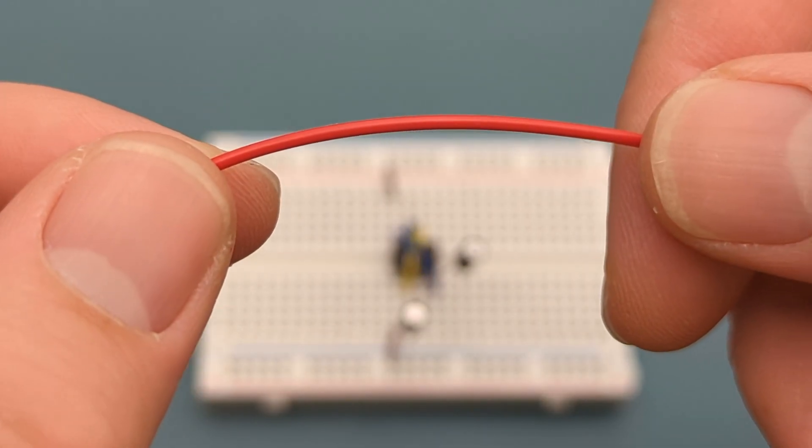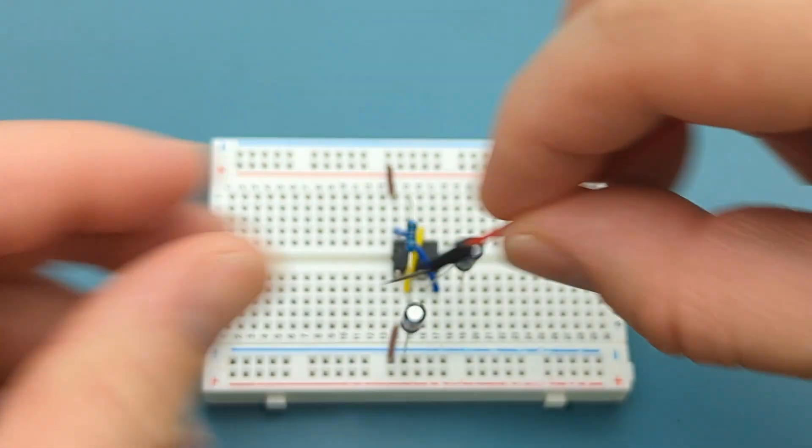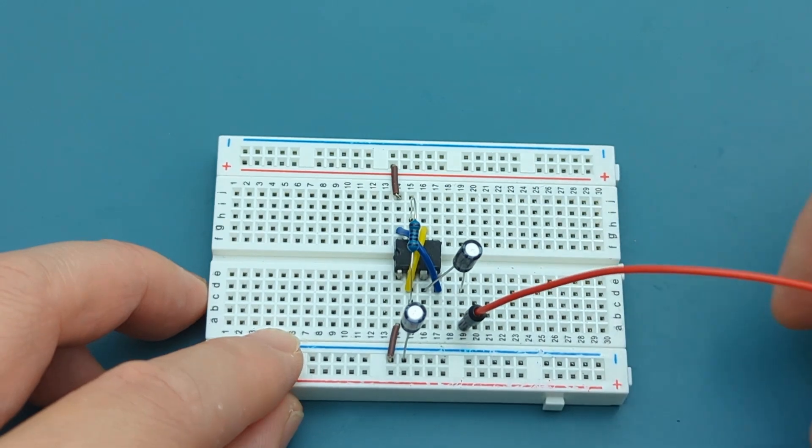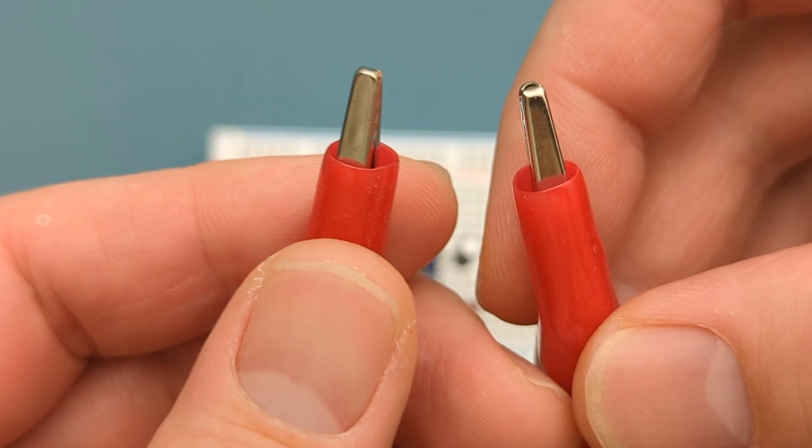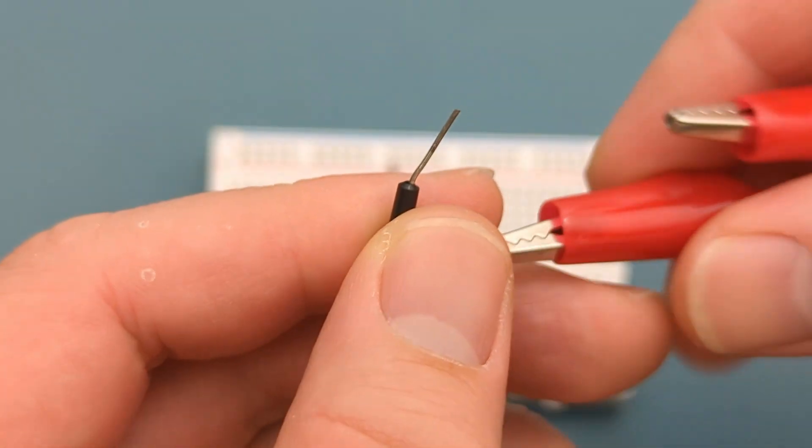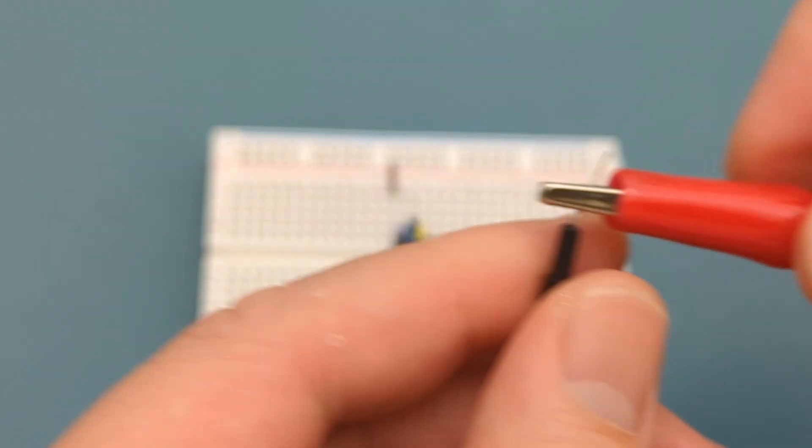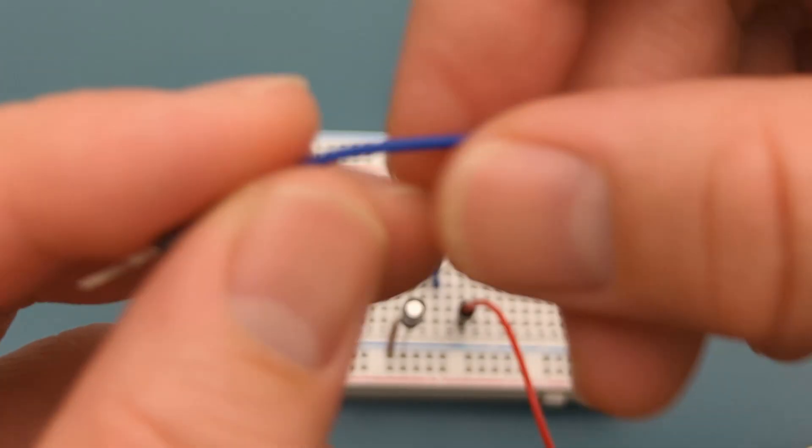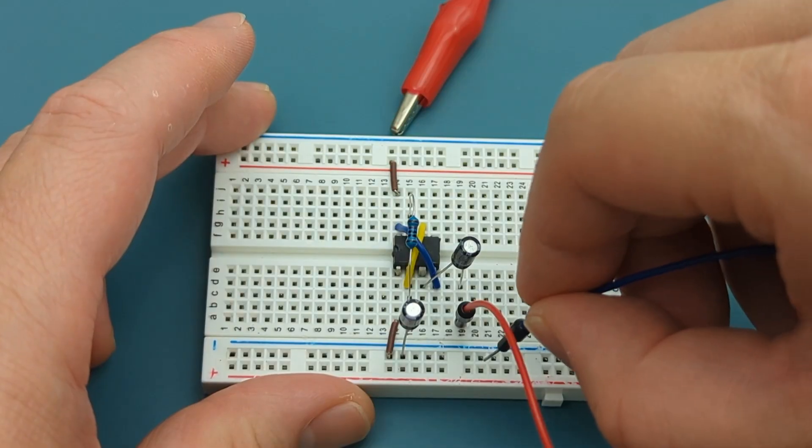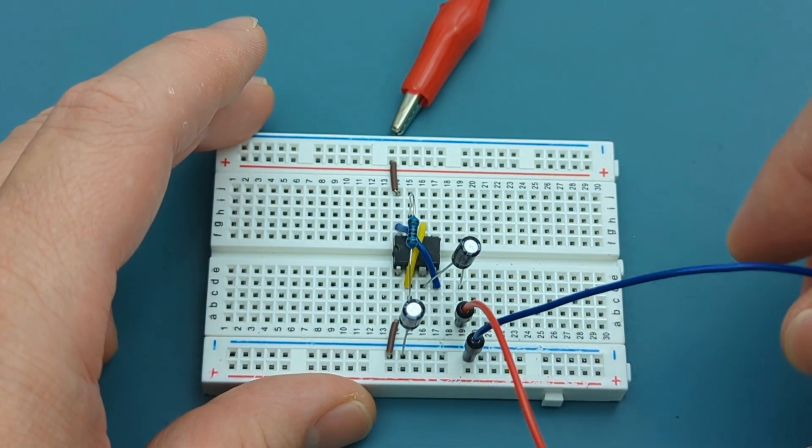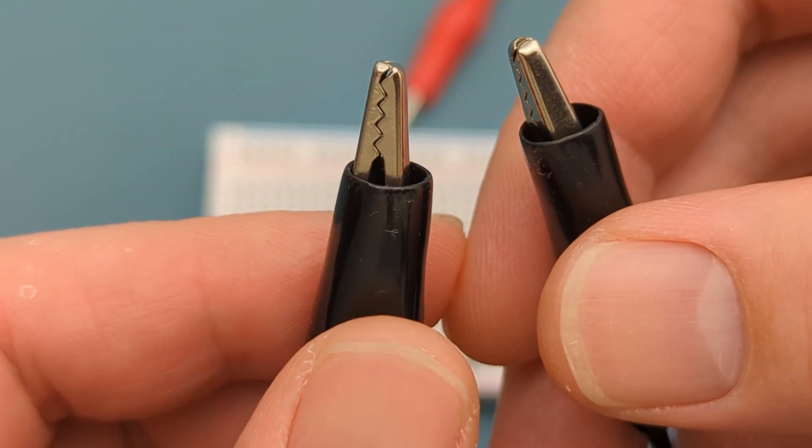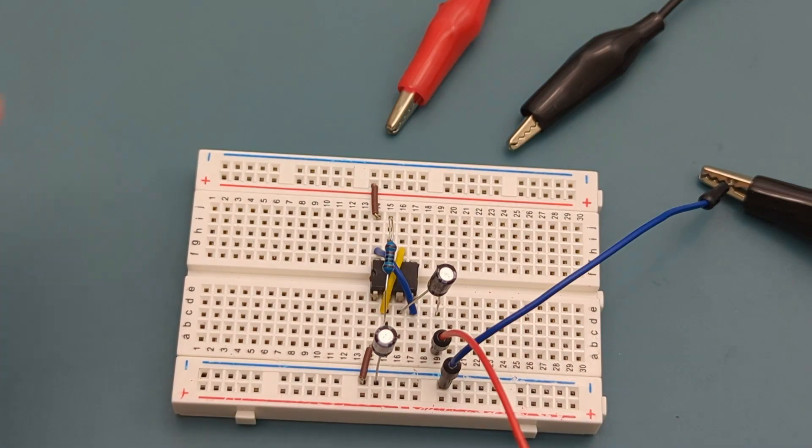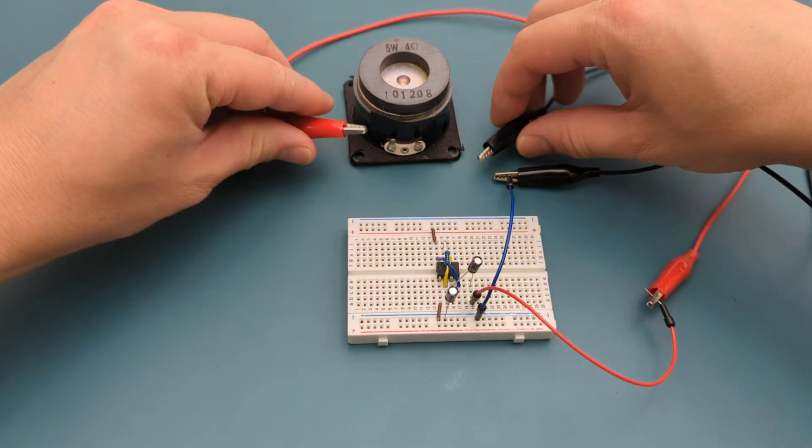Insert a jumper wire into the same row as the capacitor. Attach the alligator clip to the other end of the jumper wire. Insert a jumper wire into the negative rail. Attach the alligator clip to the other end of the jumper wire. Attach the other ends of the alligator clips to the 5 watt speaker.